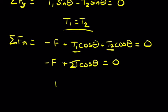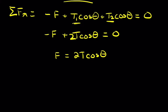So that means that F equals 2T cos theta, which means that if we divide out 2T, we get F over 2T equals cos theta. And of course, we take the inverse of cos to find the angle.